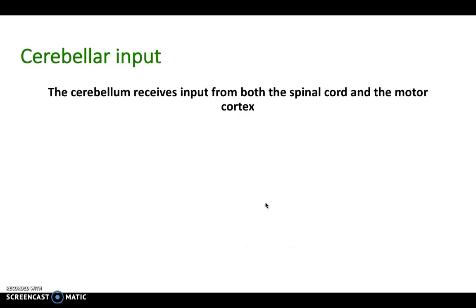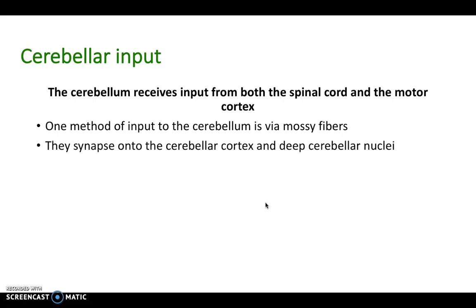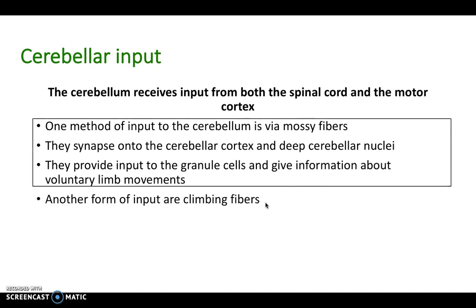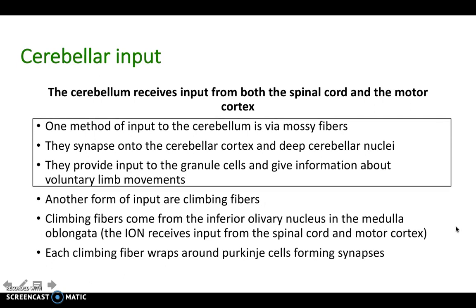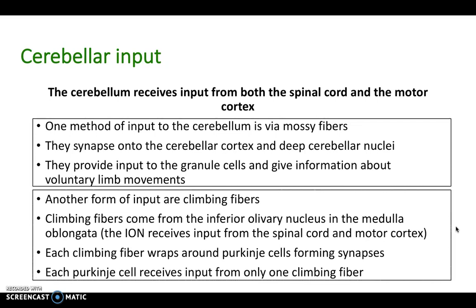The cerebellum receives its input both from the spinal cord and motor cortex. One method of input is via mossy fibers, which synapse onto the cerebellar cortex and onto the deep cerebellar nuclei, providing input to the granule cells and giving information about voluntary limb movements. Another form of input is climbing fibers, which come from the inferior olivary nucleus in the medulla oblongata. The inferior olivary nucleus itself receives input from the spinal cord and motor cortex, and each climbing fiber wraps around Purkinje cells forming synapses — each Purkinje cell receives input from only one climbing fiber.